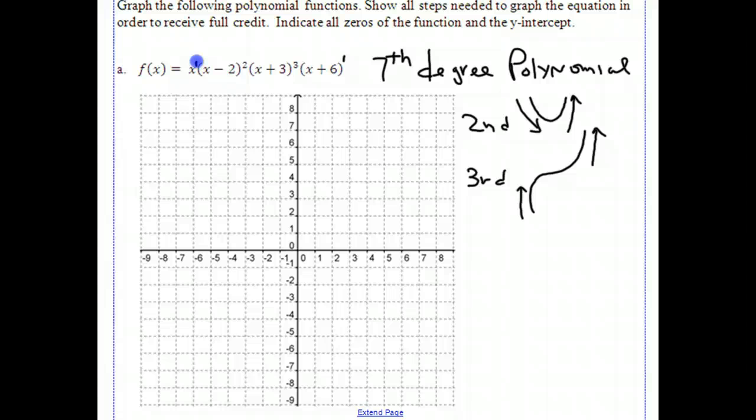So now that we have the end behavior, now let's look at the roots. We know that when we have x to the 1st, that gives us a root at 0, because that's the same thing as saying x minus 0 to the 1st. When I have x minus 2, I know that there would be a root at 2. So I'll put a circle there.